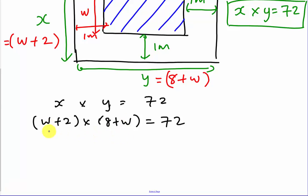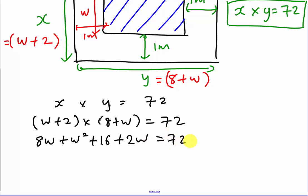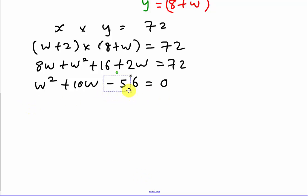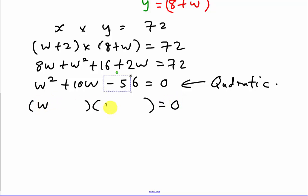Expanding: w times 8 is 8w, w times w is w squared, 2 times 8 is 16, and 2 times w is 2w. So we get w squared plus 10w plus 16 equals 72. Rearranging by moving 72 to the other side: w squared plus 10w plus 16 minus 72 equals zero. Since 16 minus 72 is negative 56, the quadratic equation is w squared plus 10w minus 56 equals zero.